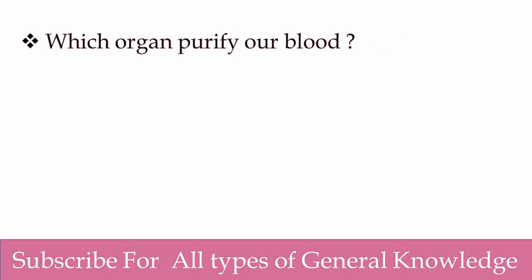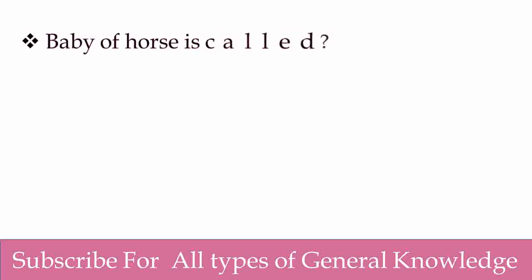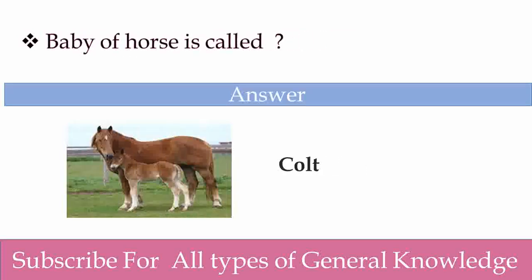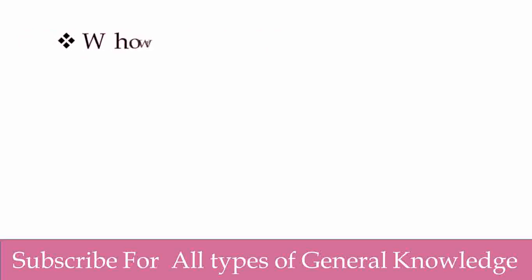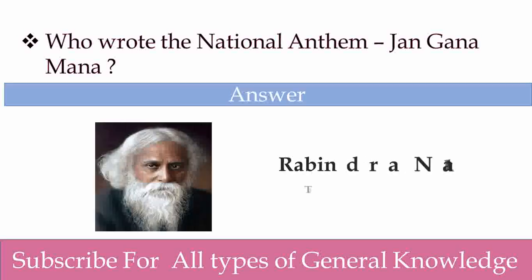Which organ purifies our blood? Kidney. Yes, kidney purifies our blood. Baby of horse is called? Colt. Yes, good. Who wrote the national anthem Jana Gana Mana? Rabindranath Tagore. Yes, Rabindranath Tagore wrote the national anthem Jana Gana Mana. Good try.